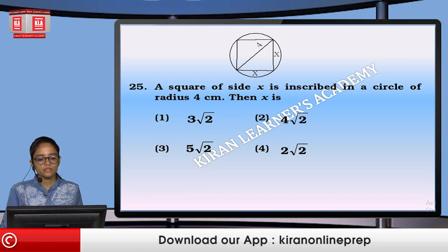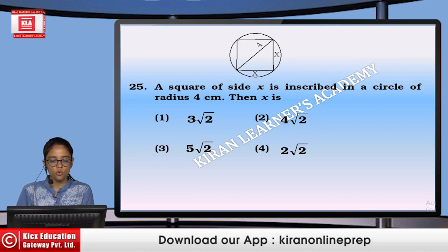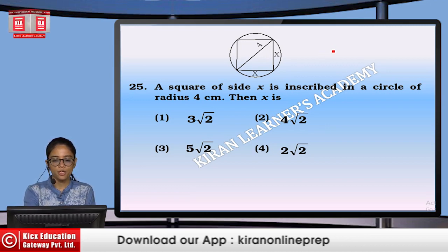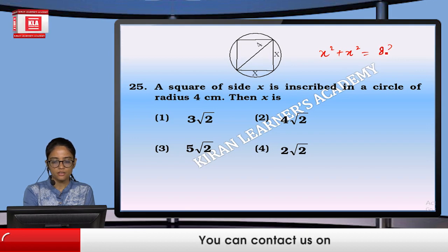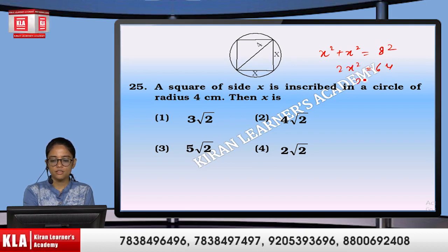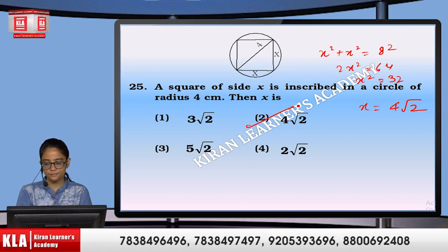A square of side X is inscribed in a circle of radius 4. The diagonal of the square equals the diameter, so X² + X² = 8². Thus 2X² = 64, X² = 32, and X = 4√2. Option number 2.